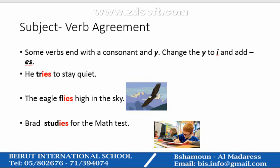Let's check out this new rule as well. Some verbs end with a consonant and "-y". You change the "-y" to "-i" and add "-es". He tries to stay quiet. The verb here is "tries" — it was initially "try" (T-R-Y). Because in the present tense the verb "try" becomes "tries": we removed the "-y" and added "-ies", because the subject "he" is singular.